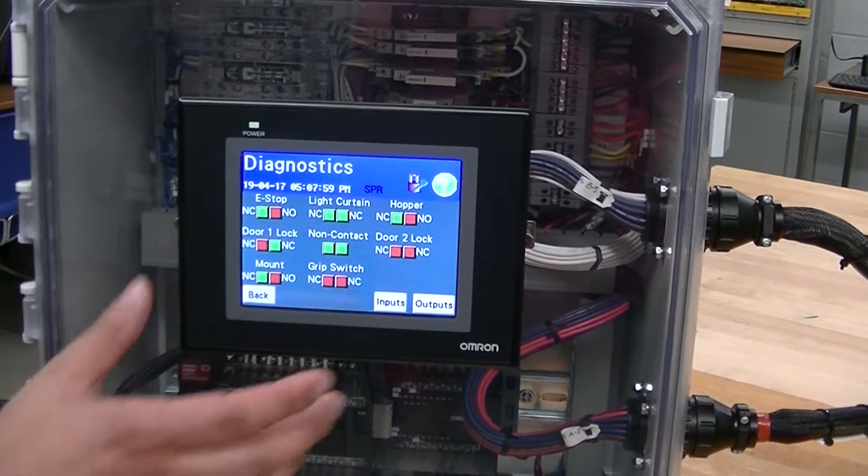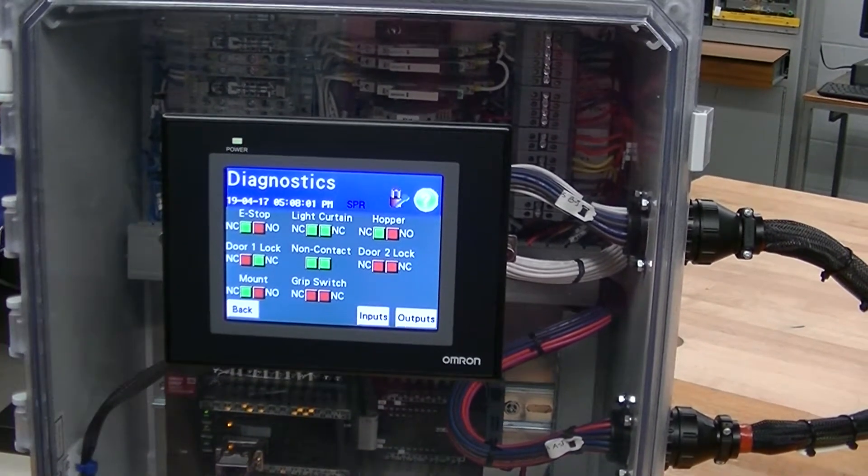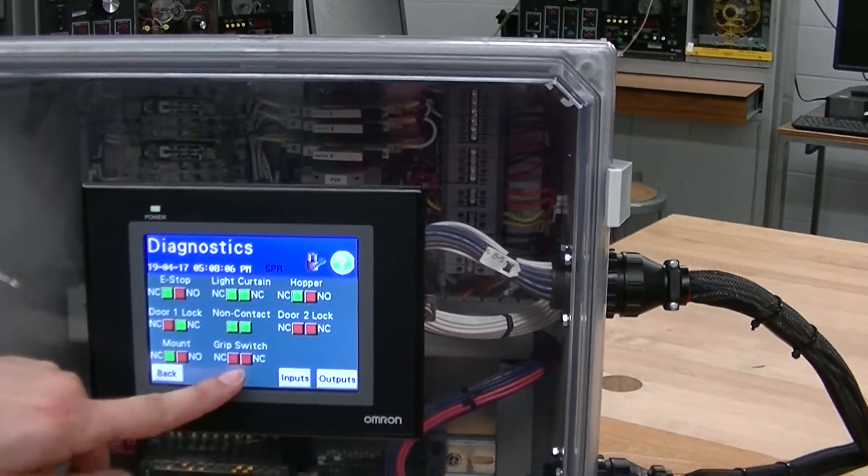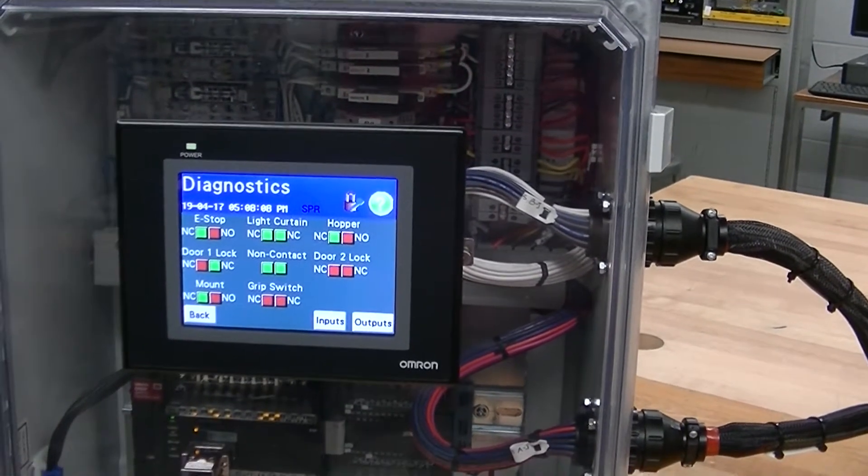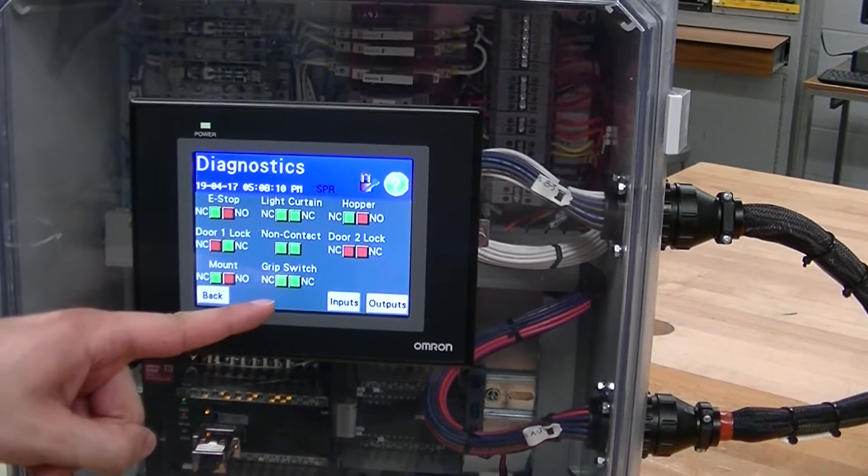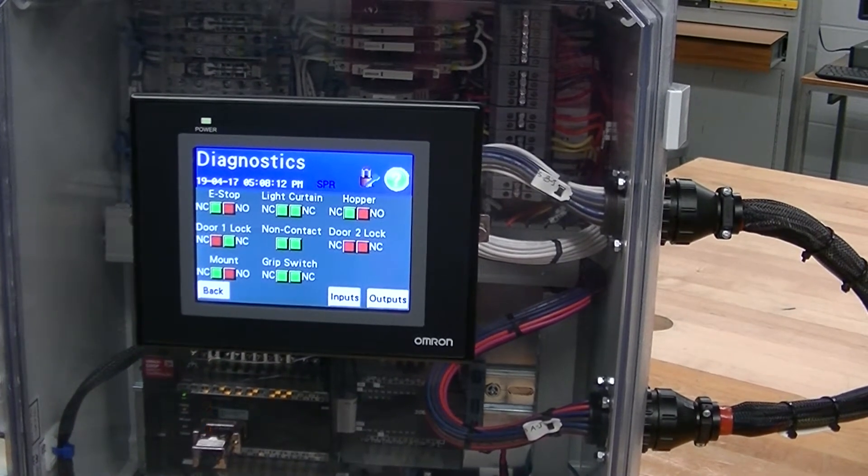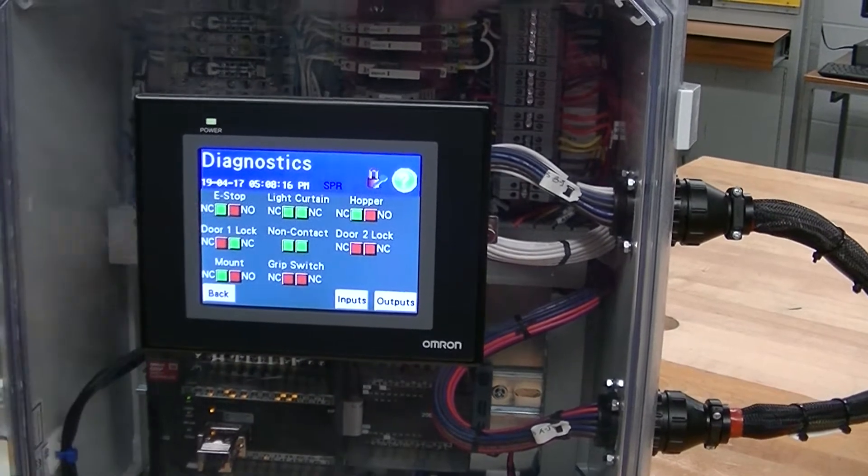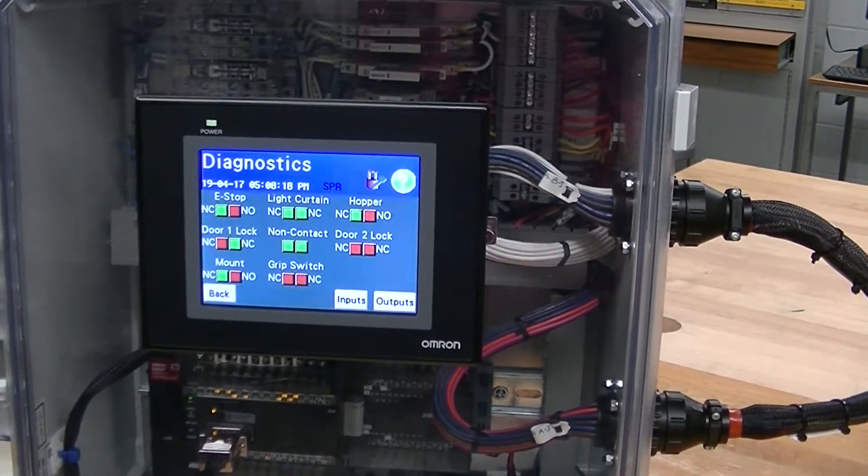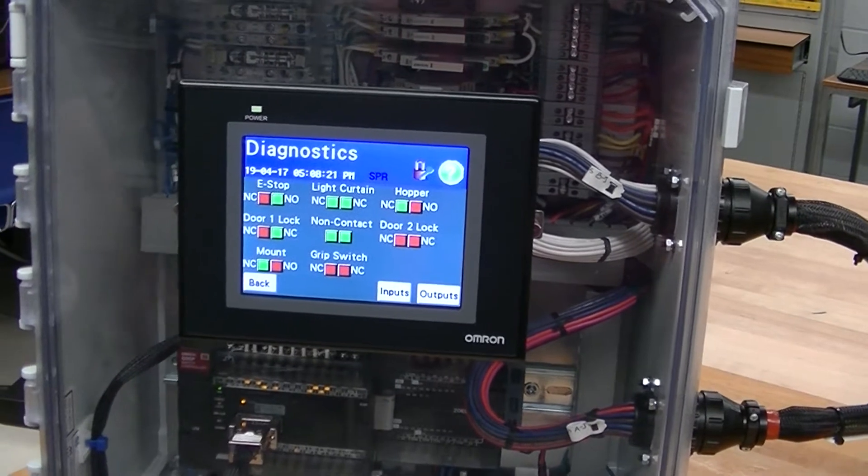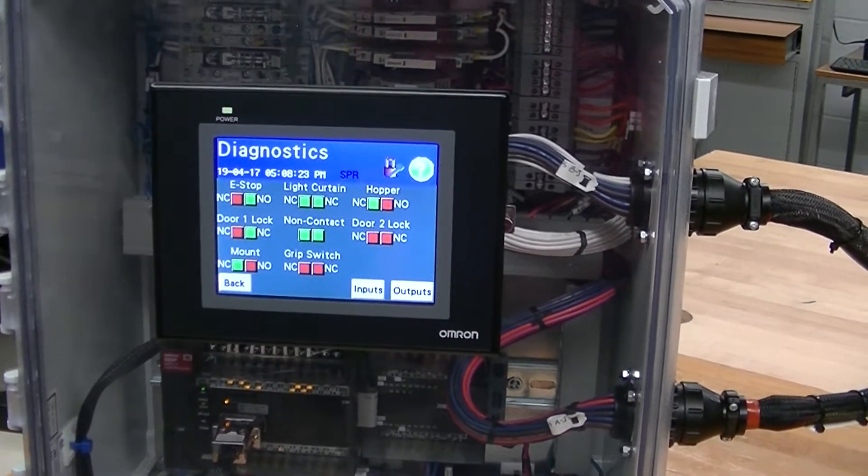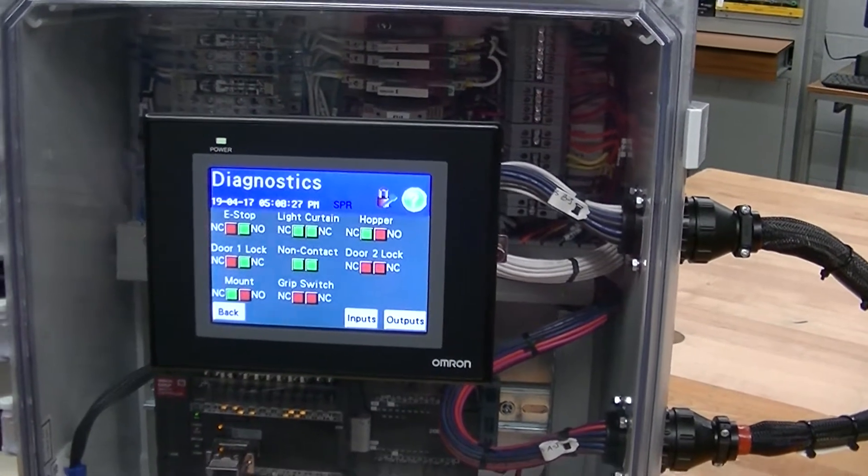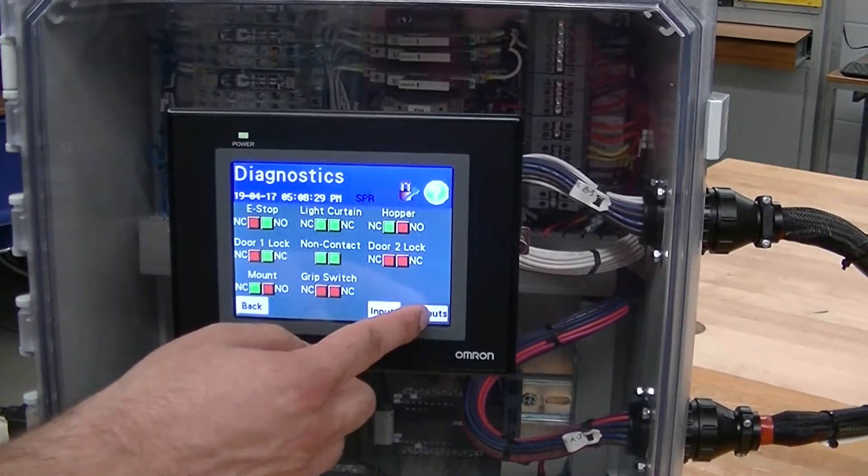Right here, we have the diagnostics page of all the inputs. While looking at this, I could reach over and grab the grip switch and you will see these contacts here change. While I grab the grip switch, the contacts change to green, letting you know those contacts are closed now. Same thing with the e-stop. If I hit the e-stop, the contacts switch over. This is a very good way of troubleshooting your system, seeing which inputs are on or off.